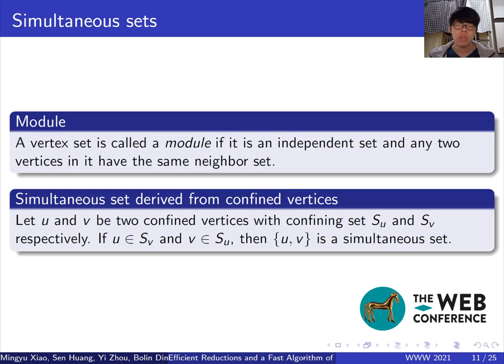The first one is called module, also called twin. A module is a set of vertices that have the same neighborhood. This is a classical concept used in many papers.